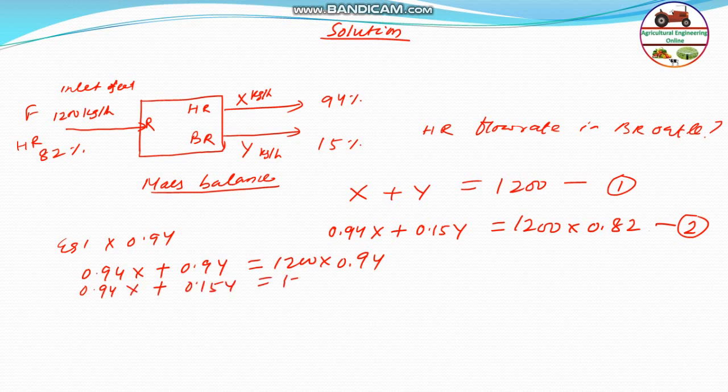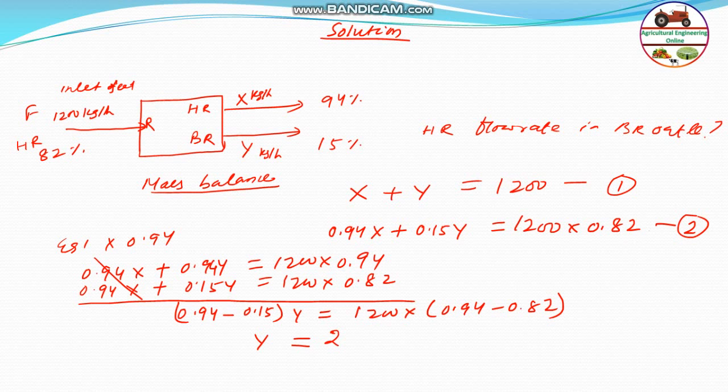See the minus. Therefore, 0.94 minus 0.15 into Y is equal to 1200 into 0.94 minus 0.82. This is the trick.